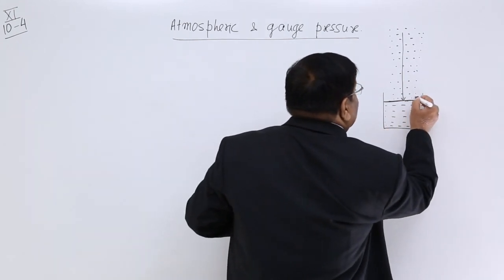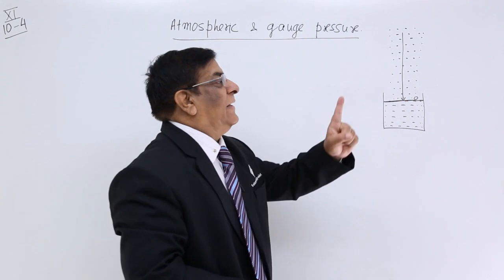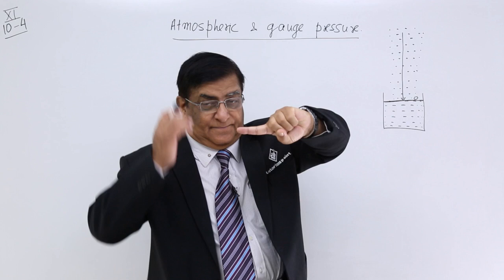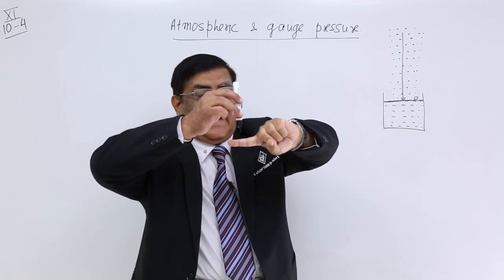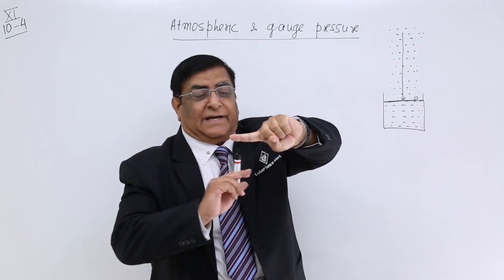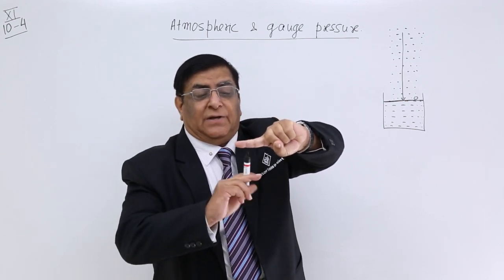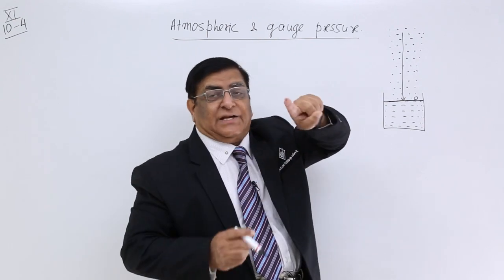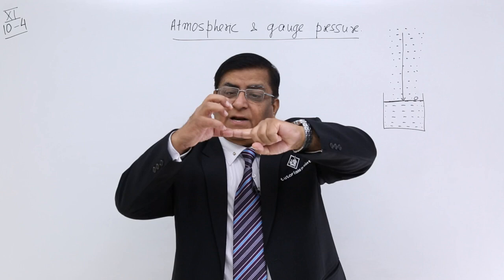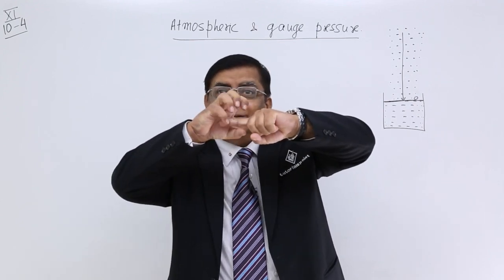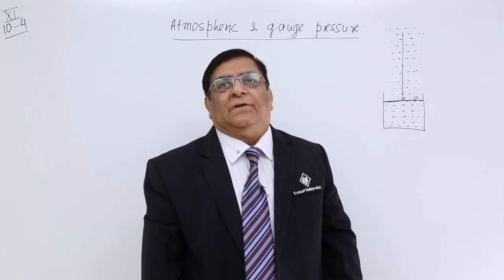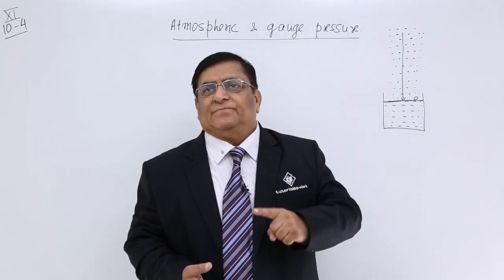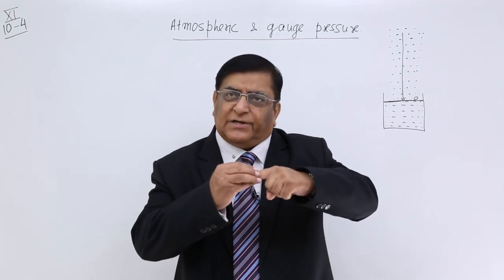If I place anything here, like if I place my finger here, then what is the direction of pressure on it? According to Pascal's law, at this point pressure is downward, at this point pressure is upward, at this point pressure is in this direction, here pressure is in this direction. So all the pressure is pressing it inward. Who is creating that pressure? The atmosphere. And in which direction? In all directions.